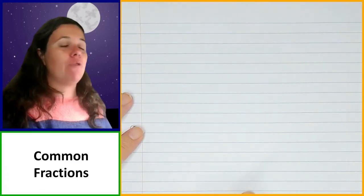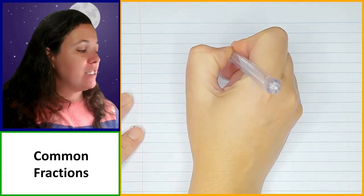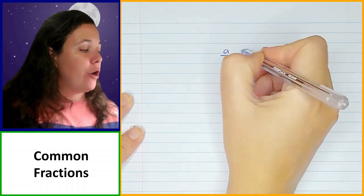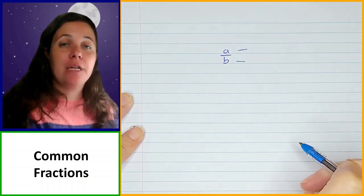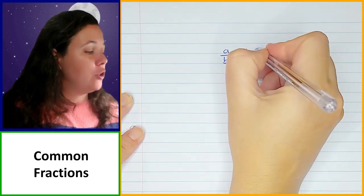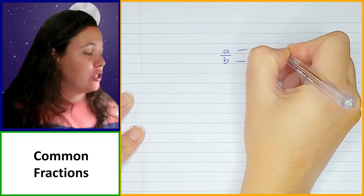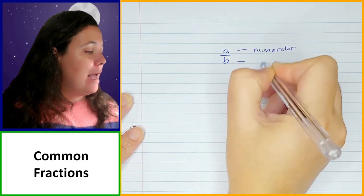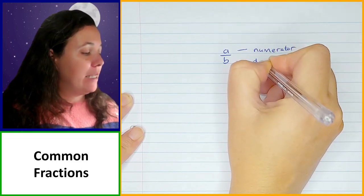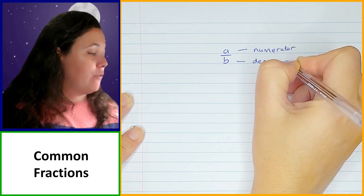Common fractions are rational numbers that are written in the form A over B, where A and B are both integers. A is what we call the numerator — that is the top number in the fraction — and B is what we call the denominator, that is the bottom number in the fraction.